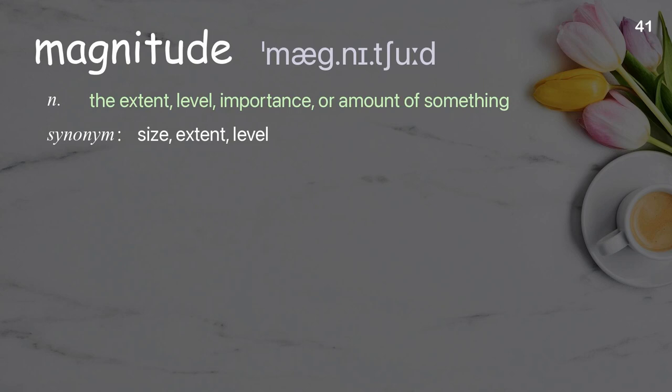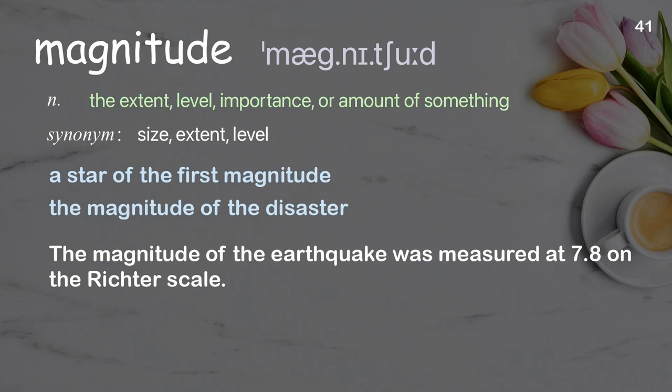Magnitude: the extent, level, importance, or amount of something. Examples: a star of the first magnitude, the magnitude of the disaster. The magnitude of the earthquake was measured at 7.8 on the Richter scale.